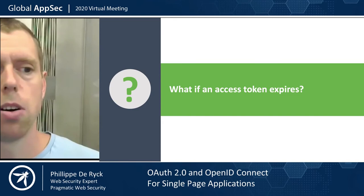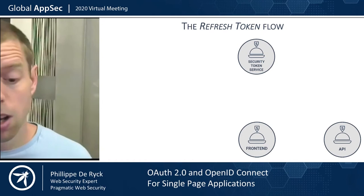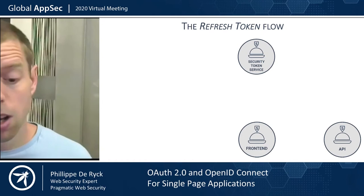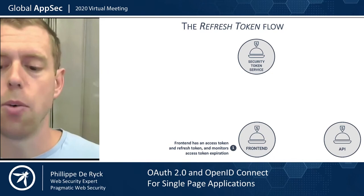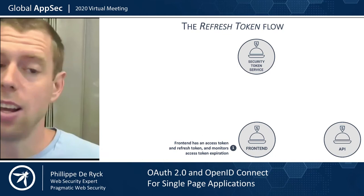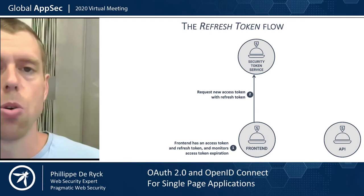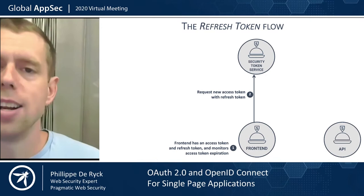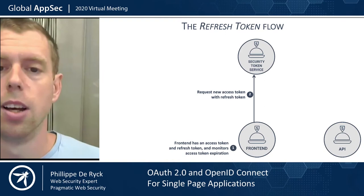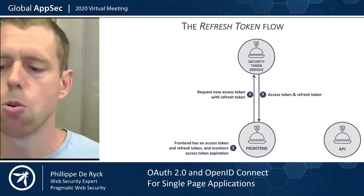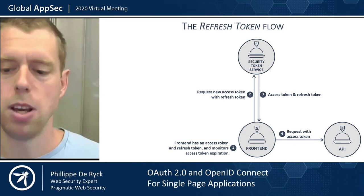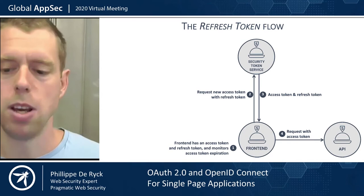That's where the refresh token flow comes into play. A refresh token flow allows us to obtain a new access token. The starting point is a front end application that already has an access token and a refresh token. It can monitor when the access token expires, or it gets an error from the API saying the token is expired. The front end sends a request to the security token service with that refresh token to ask for a new access token. The STS verifies the request, and if the refresh token is valid, it issues new tokens. With that new access token, the front end can make the desired API request.